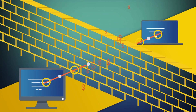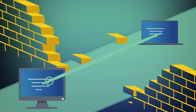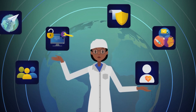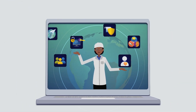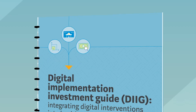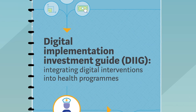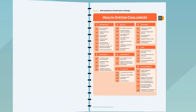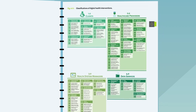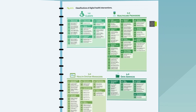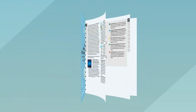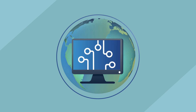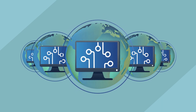Global goods are used to cut down on unnecessary spending and provide sustainable software solutions for countries, thereby saving more lives and improving the health of humans all over the world. The WHO classification framework in the Digital Implementation Investment Guide has identified 39 potential health system challenges and over 80 specific ways that digital tools can improve health services. These interventions are represented in a variety of digital health global goods. Each video in this series will highlight a specific global good.